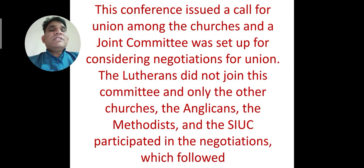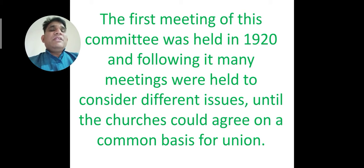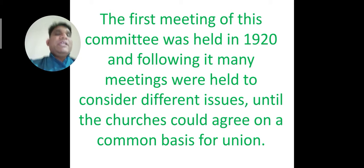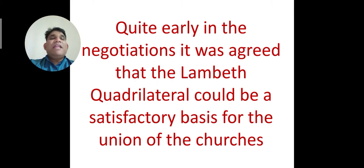The Lutherans did not join this committee, and only the other churches — the Anglicans, the Methodists, and the SIUC — participated in the negotiations that followed. The first meeting of this committee was held in 1920, and following it many meetings were held to consider different issues until the churches could agree on a common basis for union. Quite early in the negotiations, it was agreed that the Lambeth Quadrilateral could be a satisfactory basis for the union of the churches.